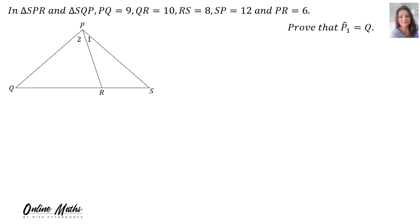Let's do another example. In triangle SPR — that's the blue one, the little one — and triangle SQP, that's the big triangle. The following is given: PQ equals 9, QR equals 10, RS equals 8, SP equals 12, and PR equals 6. We have to prove that angle PR equals angle Q. If we can prove that these two triangles are similar, then they will be equiangular.